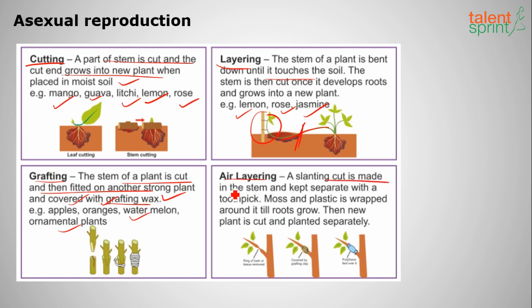The next method is air layering. A slanting cut is made in the stem and kept open with a toothpick. Moss and plastic are wrapped around it until new roots grow, then the new plant is cut and planted separately.